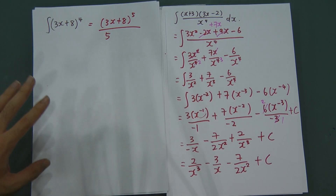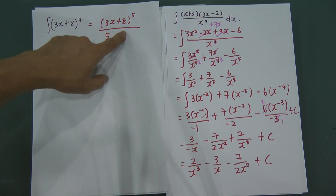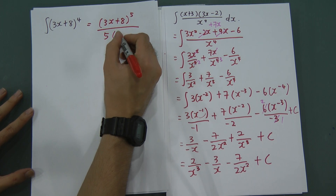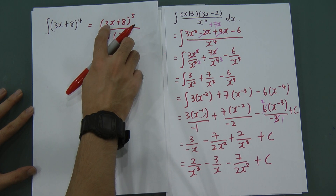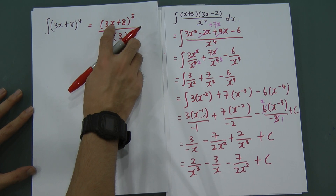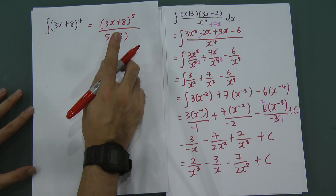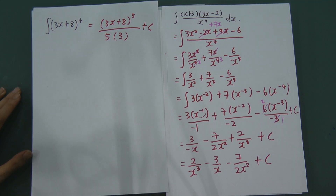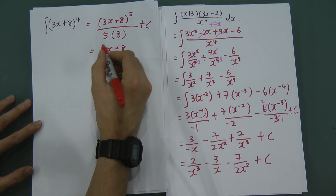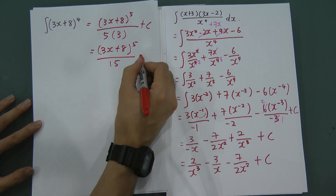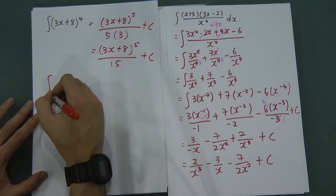When you differentiate (3x + 8) inside, you get 3. Put 3 on the bottom. Remember to add C. Therefore the answer is (3x + 8)⁵ divided by 15 plus C, because 5 multiplied by 3 is 15.